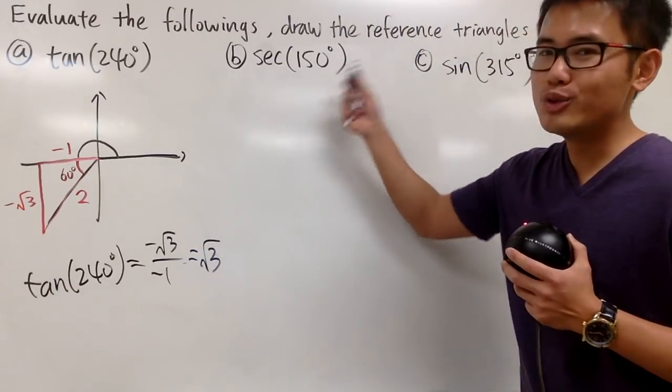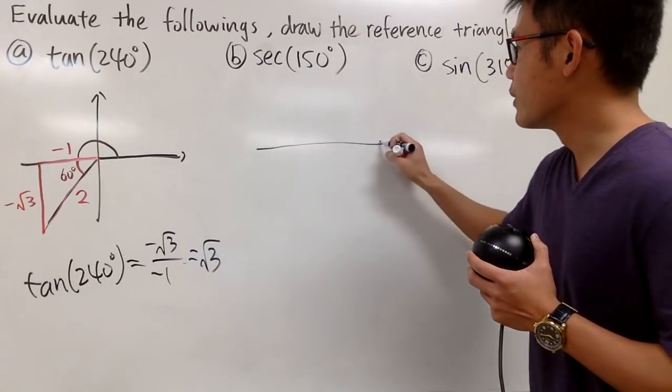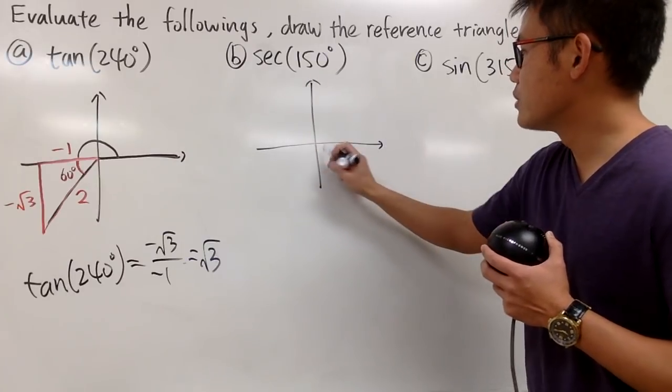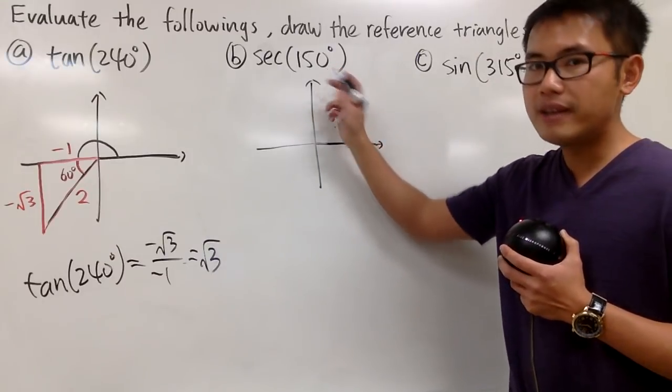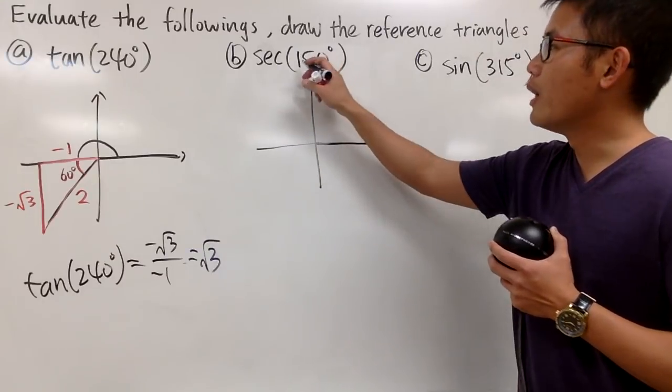Now, secant of 150 degrees, same thing. We draw a picture first. Starting from the positive x-axis. This time, we only need to rotate counterclockwise 150 degrees.